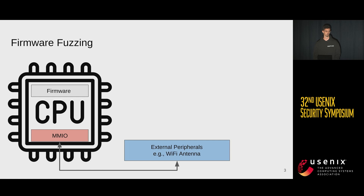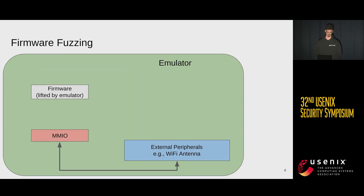Fuzzing this is super hard. We do not want to actually fuzz the firmware directly because it's hard to get information in, hard to get information out, and hard to reset the state — or at least it costs a lot of time to reset the state after each fuzzing iteration. So what people have been doing is just throw the whole thing into an emulator, lifting the firmware and running it inside an emulator.